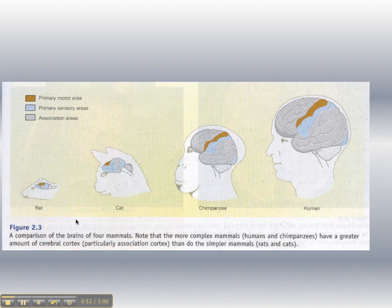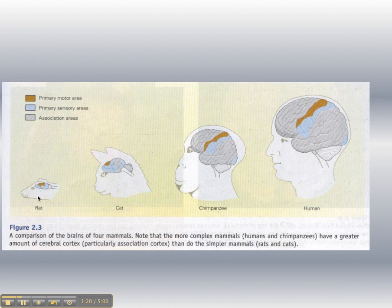Here's an image of a human, chimpanzee, cat, and rat, and in this image you'll notice it shows you three areas: the association areas, the sensory areas, and the motor areas. Compare the amount of association area between the human, the chimpanzee, the cat, and the mouse. As you go down to the lower-level mammals, what do you notice about the amount of association areas compared to the primary motor area and sensory areas? Why do you think that rats and cats have a far larger amount of cerebral cortex dedicated to sensory areas compared to a chimpanzee or a human?